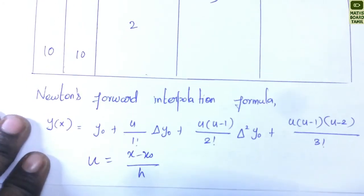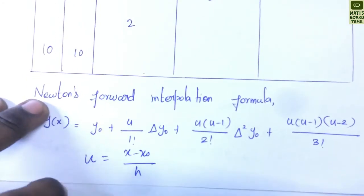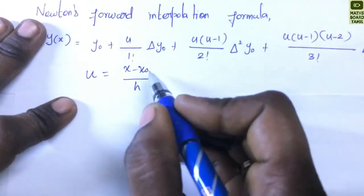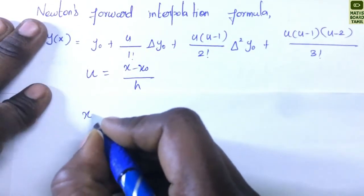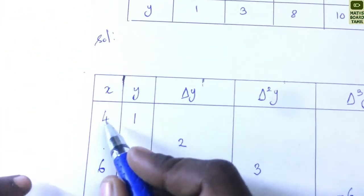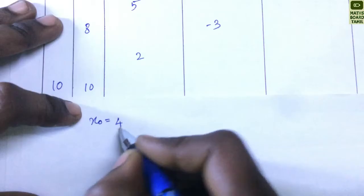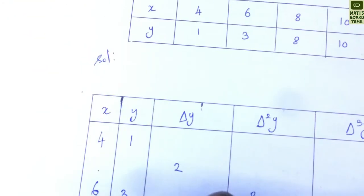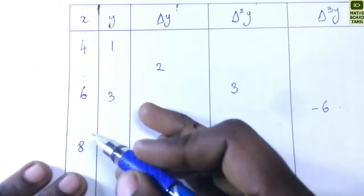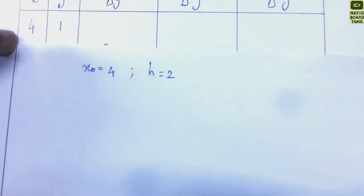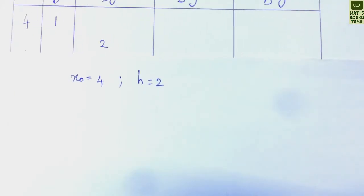Here x0 = 4 and h = 6−4 = 2, or equivalently 8−6 = 2, so h = 2. We will substitute these values into the formula.